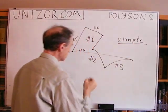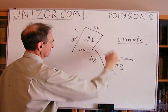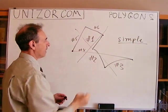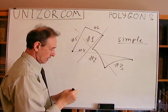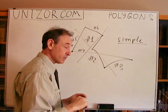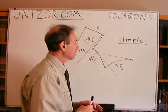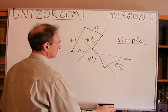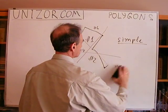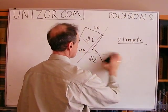A self-intersecting figure is not a simple polygon, although it is technically a polygon. But we will never consider anything like that. So that's one classification.